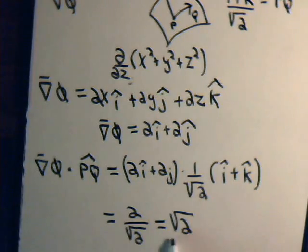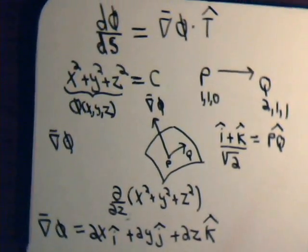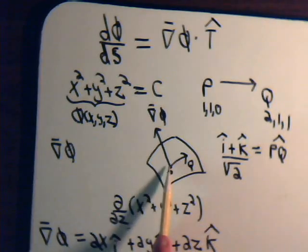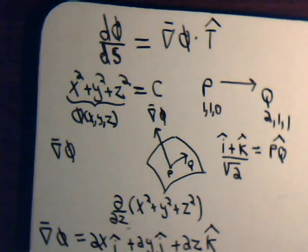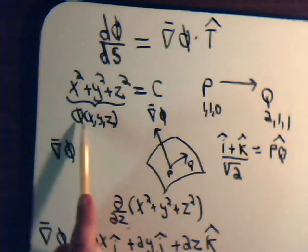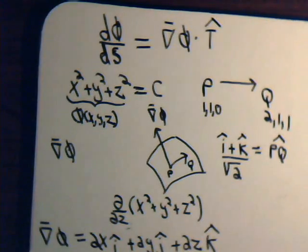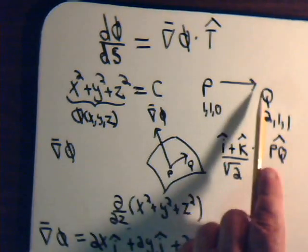So that tells us then that is the projection of the gradient vector onto the unit vector pq. And that tells us then the rate of change of our scalar when we're moving in the direction from p to q.